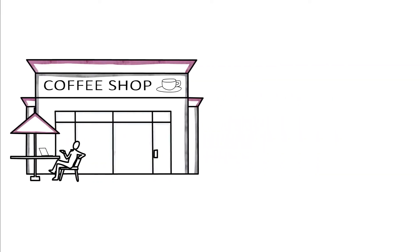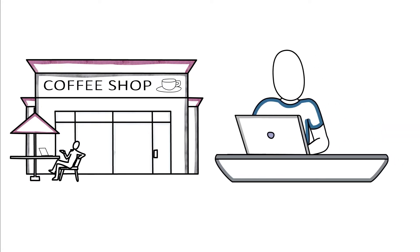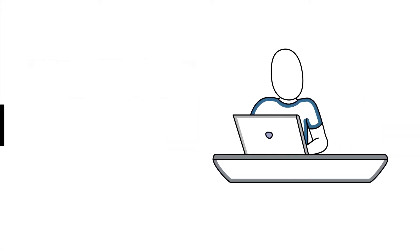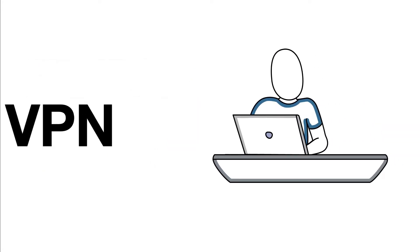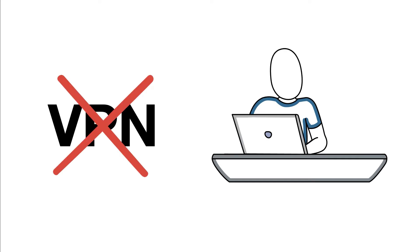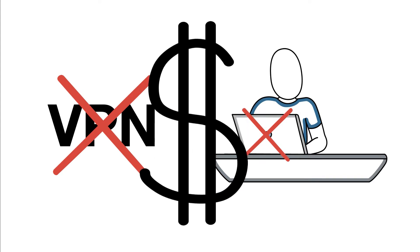When off-campus searching for information for your academic work, it is vital that you use the virtual private network, known as the VPN. Without the VPN, you won't be seeing all the information available to you as a UC Merced student. In fact, you may be prompted to pay for information. Don't do it.